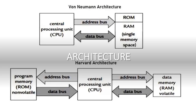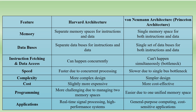Harvard architecture was developed by Harvard University, which is why it is named Harvard architecture. Here the CPU accesses the instruction and the data memory space separately — it is not a single memory but separate memories. Von Neumann is considered a traditional design, mostly used in personal computers, and is very simple and cost-effective. Harvard architecture offers better performance but is a bit more complex compared to von Neumann.